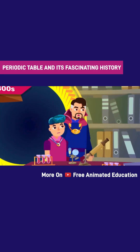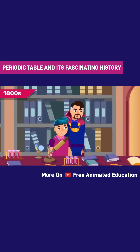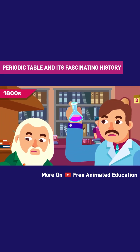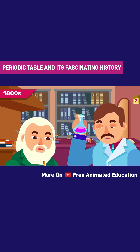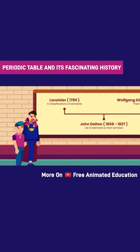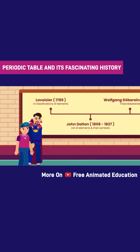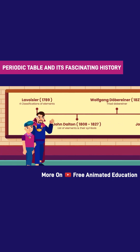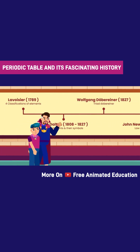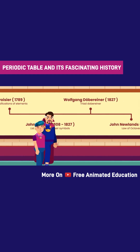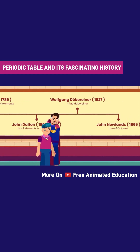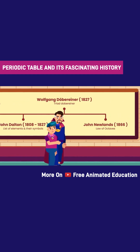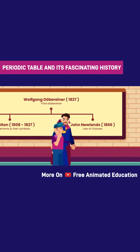Since the 1800s, lots of chemists have tried to find the best way to organize the elements. Originally, there were a lot of different ideas, including from Lavoisier, Dalton, Döbereiner, and Newlands.